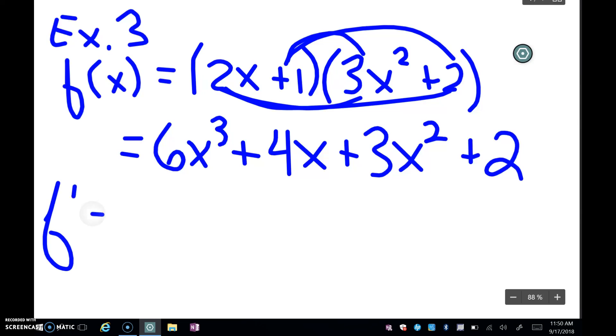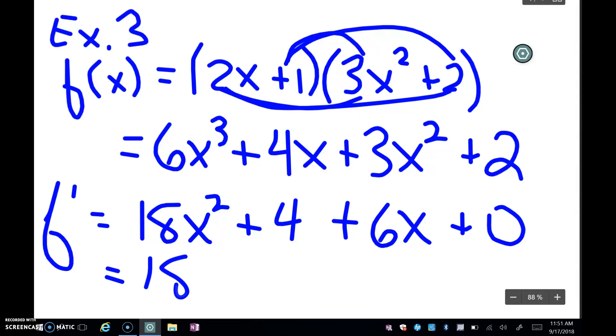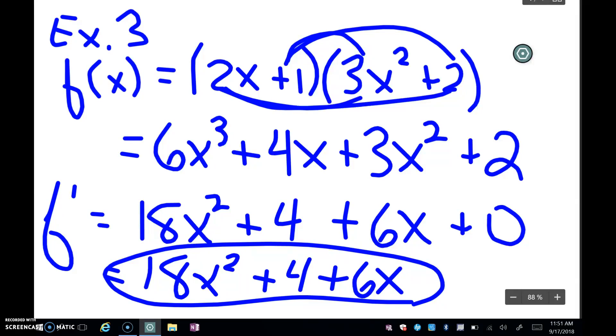So my derivative will be 18x^2 for the first term plus 4 for the second term plus 6x and then plus 0. So leaving the 0 off, you have 18x^2 + 4 + 6x is my final answer there. And I could write that in order, but that's good enough.